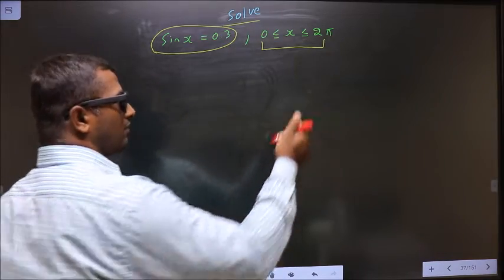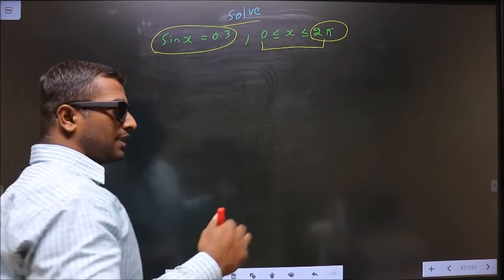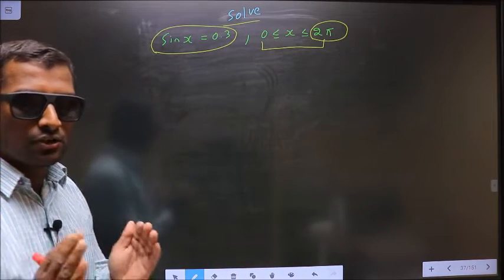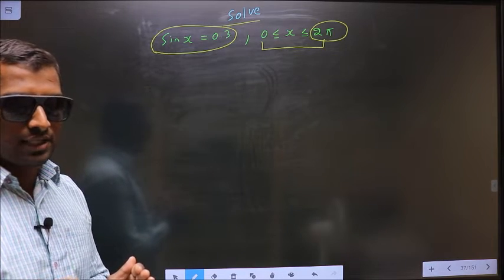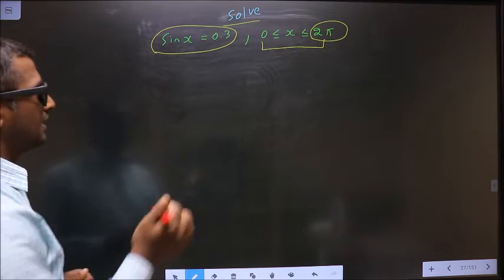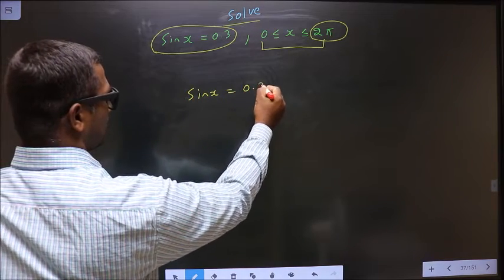Now whenever you have pi or in terms of pi, that should tell you to keep your answer in radians. The given equation is sin x = 0.3.